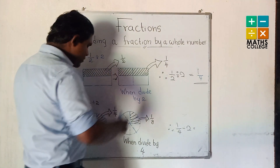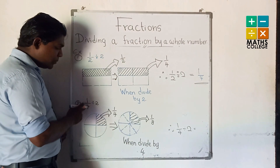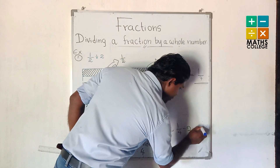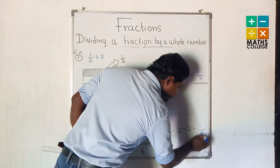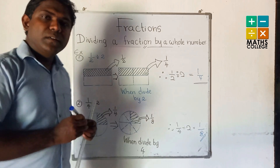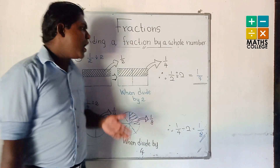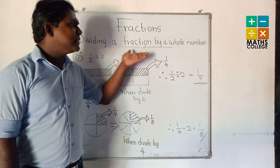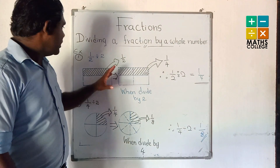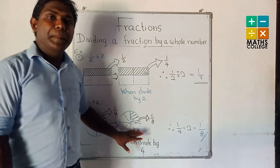That means we can say 1/4 divided by 2. The answer is 1 upon 8. Now you know how to divide a fraction by a whole number using the graphical method.